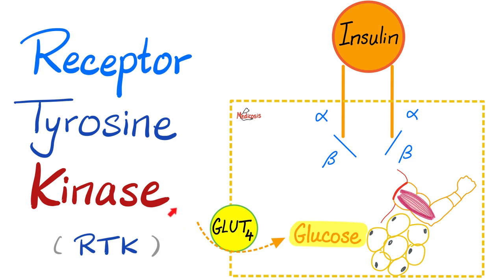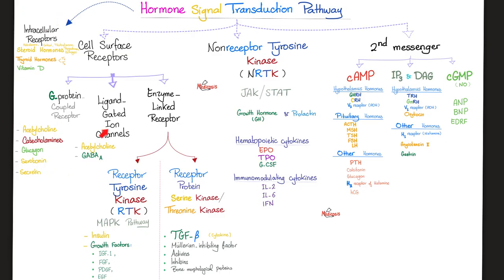Here's glucose. Glucose wants to enter into the cell, such as a skeletal muscle cell or fat cell. How does glucose enter? You have to open a door for glucose — the name of the door is GLUT4. Who stimulates this door to open? Insulin, which binds to its insulin receptor, the receptor tyrosine kinase. All of this will start a cascade reaction by which you get this GLUT4 to open, letting the glucose in so that your skeletal muscles and adipose tissue enjoy the time. We talked about all of this before.